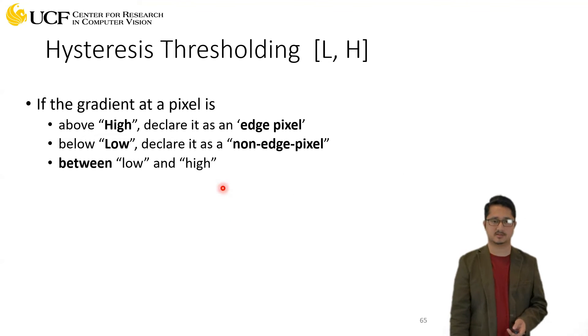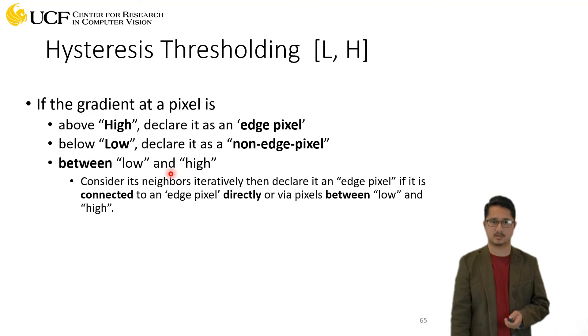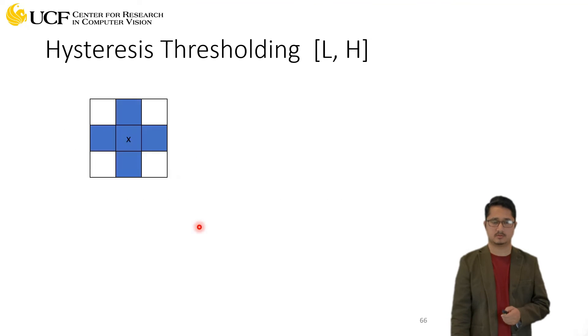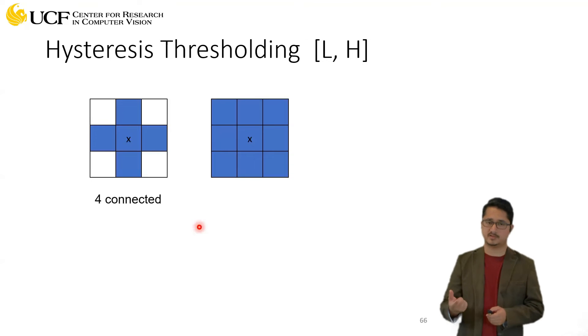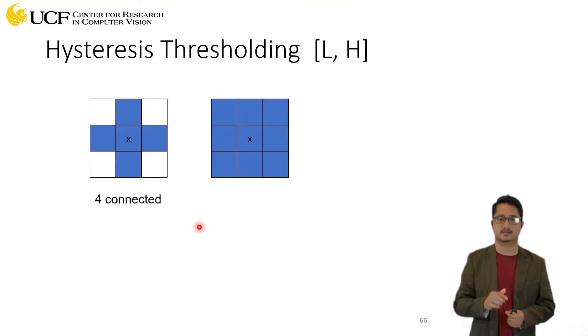One interesting question is when we're trying to find the connectedness of the pixels - whether they are neighbors or not - there are different ways to do that. We can have four-connectedness, where if we're looking at this pixel value, they are connected in this neighboring way: left, right, top, and bottom.